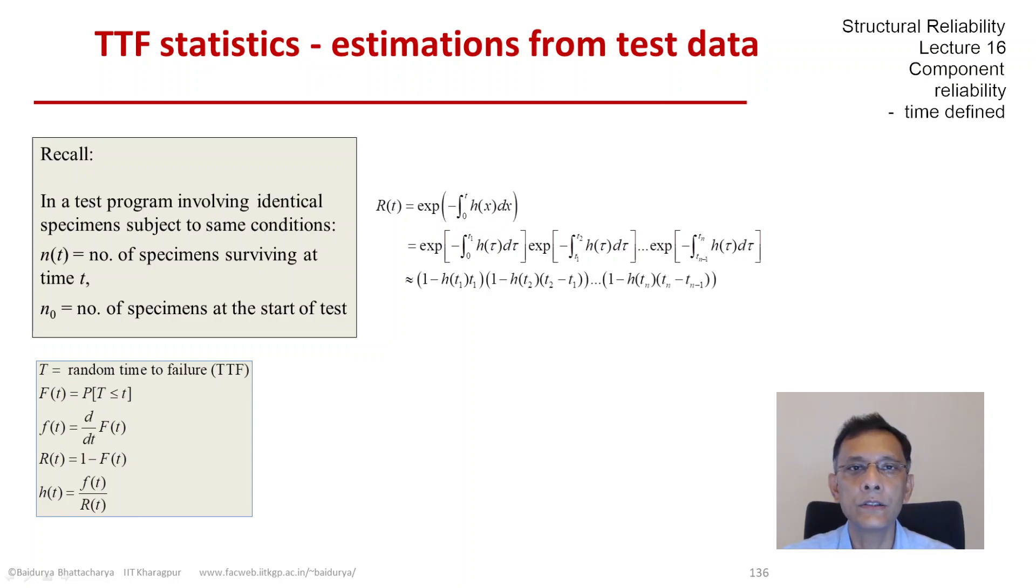And each of these exponentials, we can approximate to the first linear term. So the first term becomes 1 minus h of t1 times the length of the interval from 0 to t1. The next one is 1 minus h of t2 times t2 minus t1 and so on. So we have a product of all these 1 minus h*dt's. And that would also give me an approximation of the reliability function.